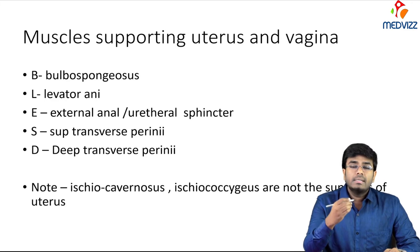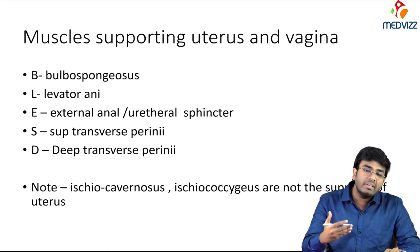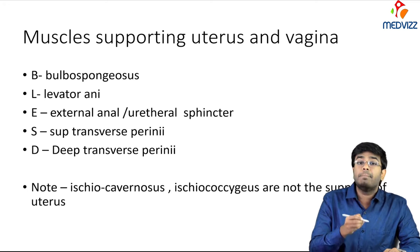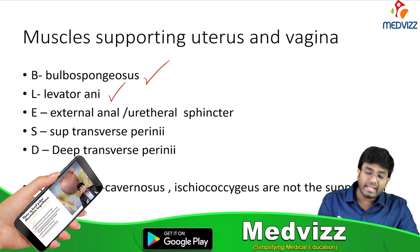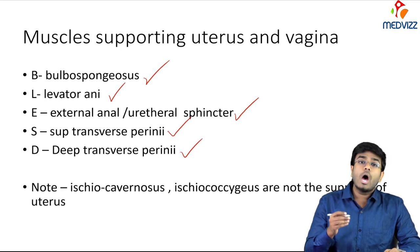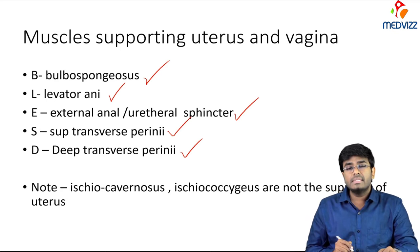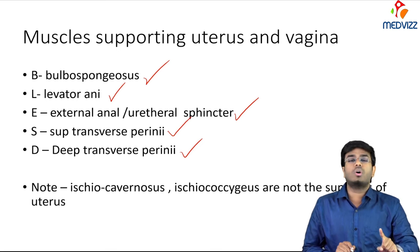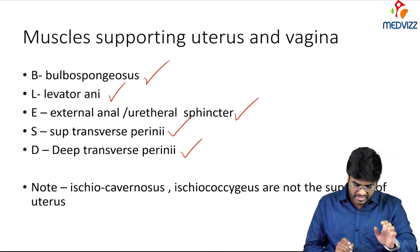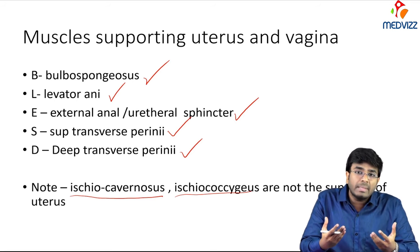Apart from the levator ani, other muscles support the uterus — remembered by the mnemonic BLESSED: Bulbospongiosus, Levator ani, External anal sphincter, External urethral sphincter, Superficial transverse perinei, Deep transverse perinei. Important point: levator ani is made up of pubococcygeus and iliococcygeus — ischiococcygeus is NOT part of levator ani and does not support any pelvic organ.